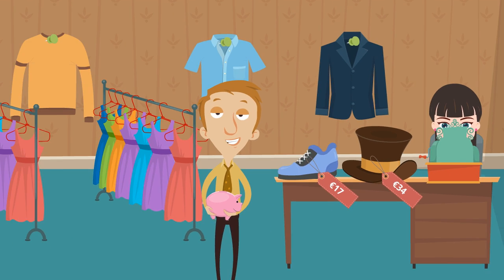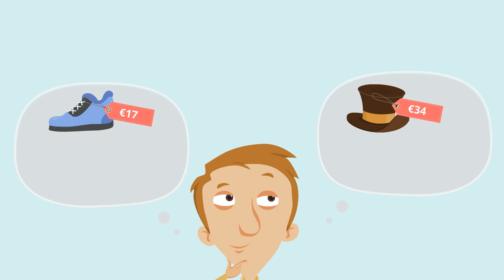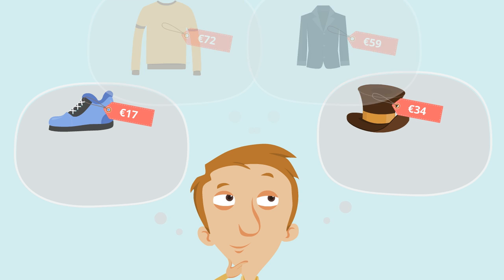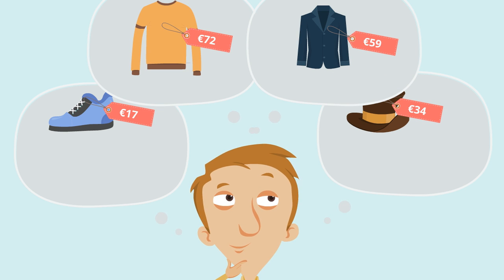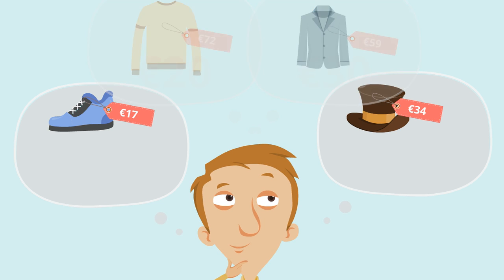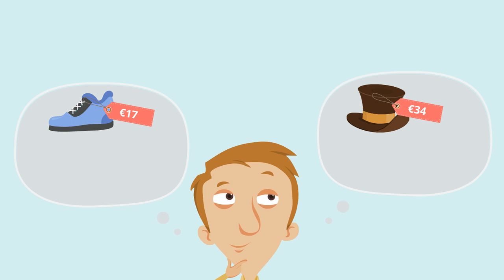Now, the problem is these numbers are kind of difficult to add in our head, especially if we wanted to buy one or two more pieces of clothes — things will get very difficult very quickly. But luckily, we can use rounding to help us make a quick estimate of how much this might cost us.